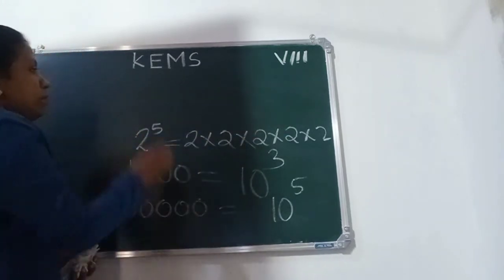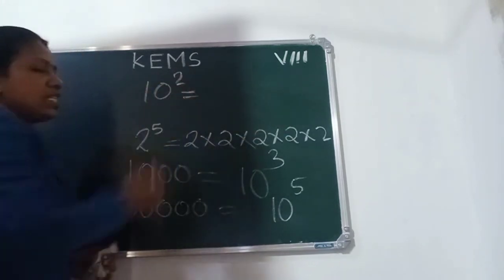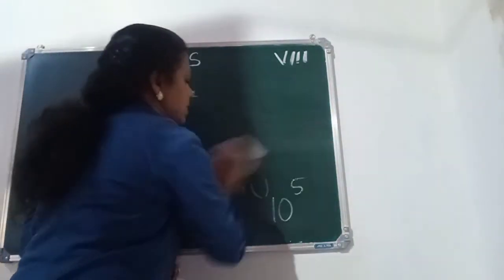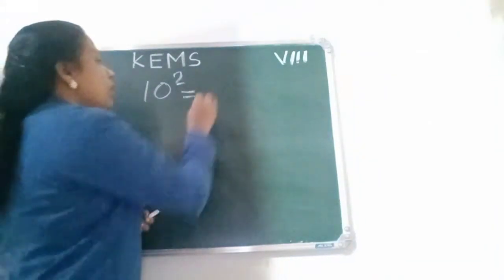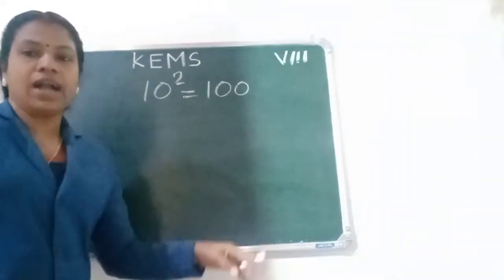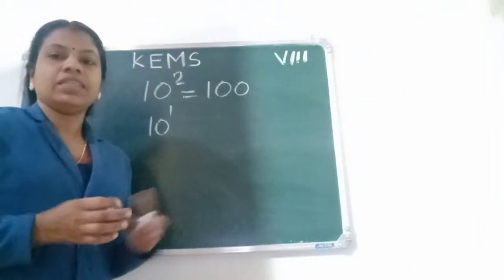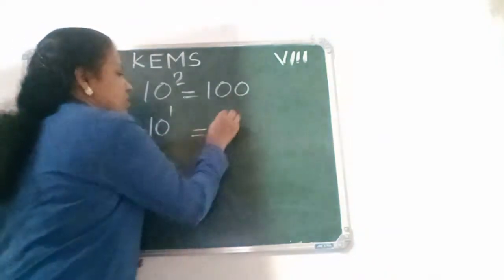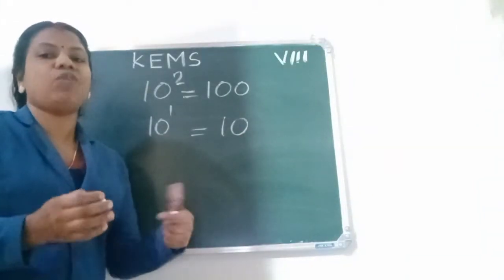What is 10 power 2? That is 10 square. 10 square equals 2 times 10, that is 10 into 10, which equals 100. What is 10 power 1? 10 power 1 is equal to 10 itself.